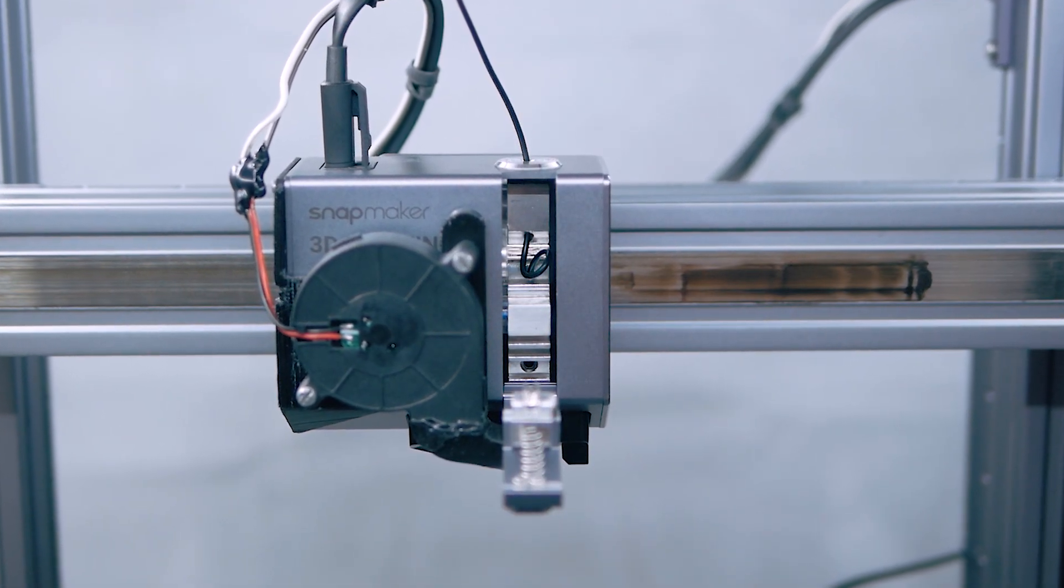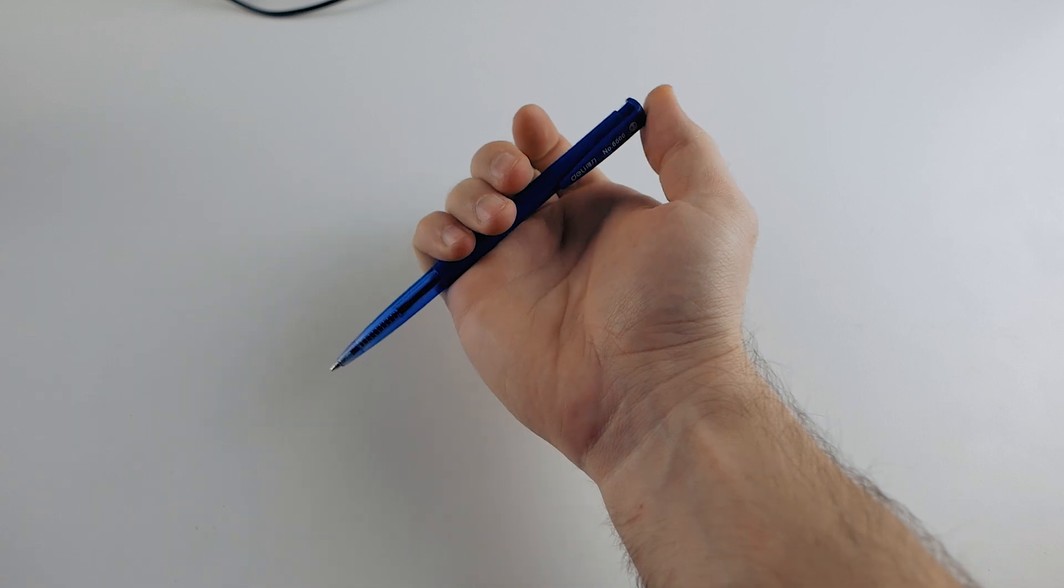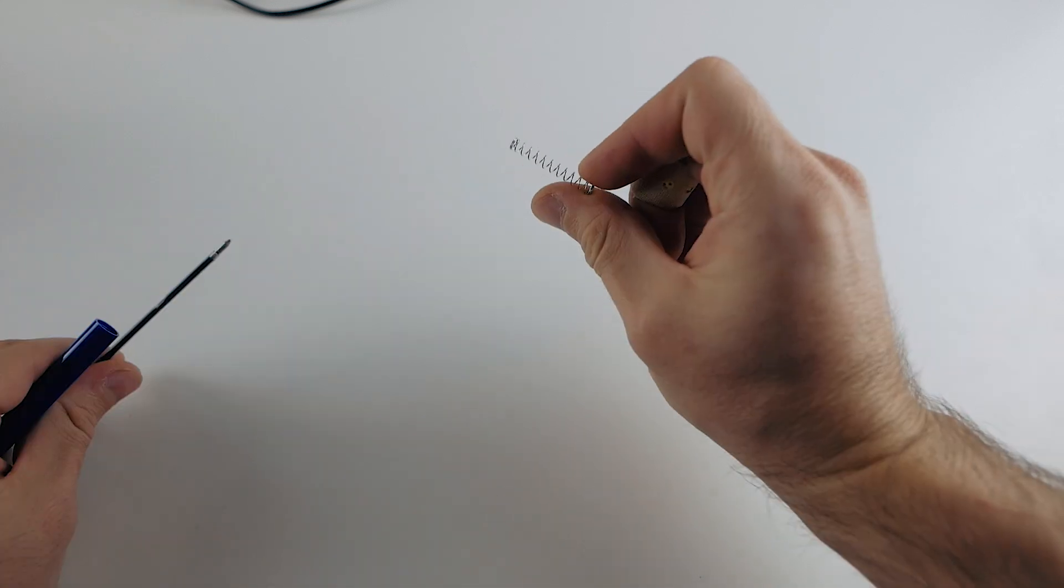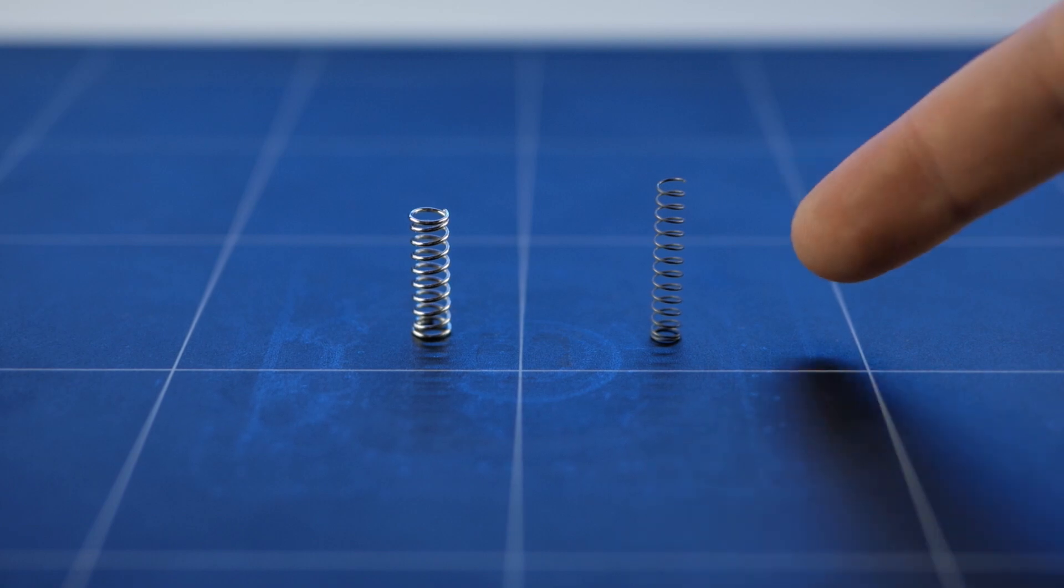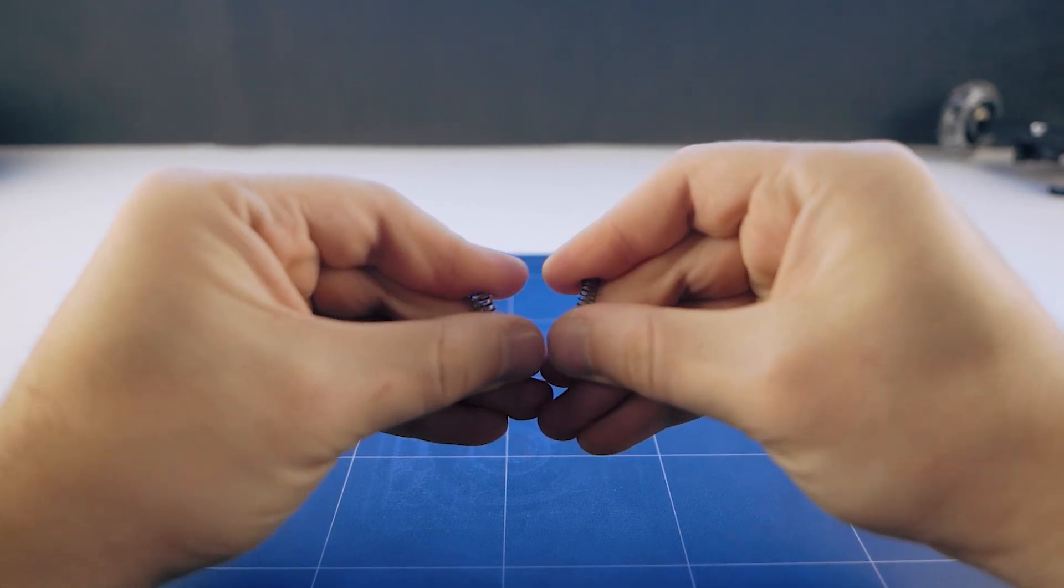Here is my super simple solution. Get any clickable pen, disassemble it, and get its spring. Left is factory spring, right is pen spring. Factory spring is much stiffer.